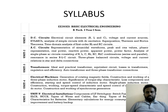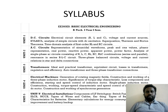Let's have a quick look at your syllabus. It's basic electrical engineering. You have Unit 1 as DC circuits, Unit 2 as AC circuits, and Unit 3 as transformers. Unit 4 is electrical machines and Unit 5 is electrical installations.